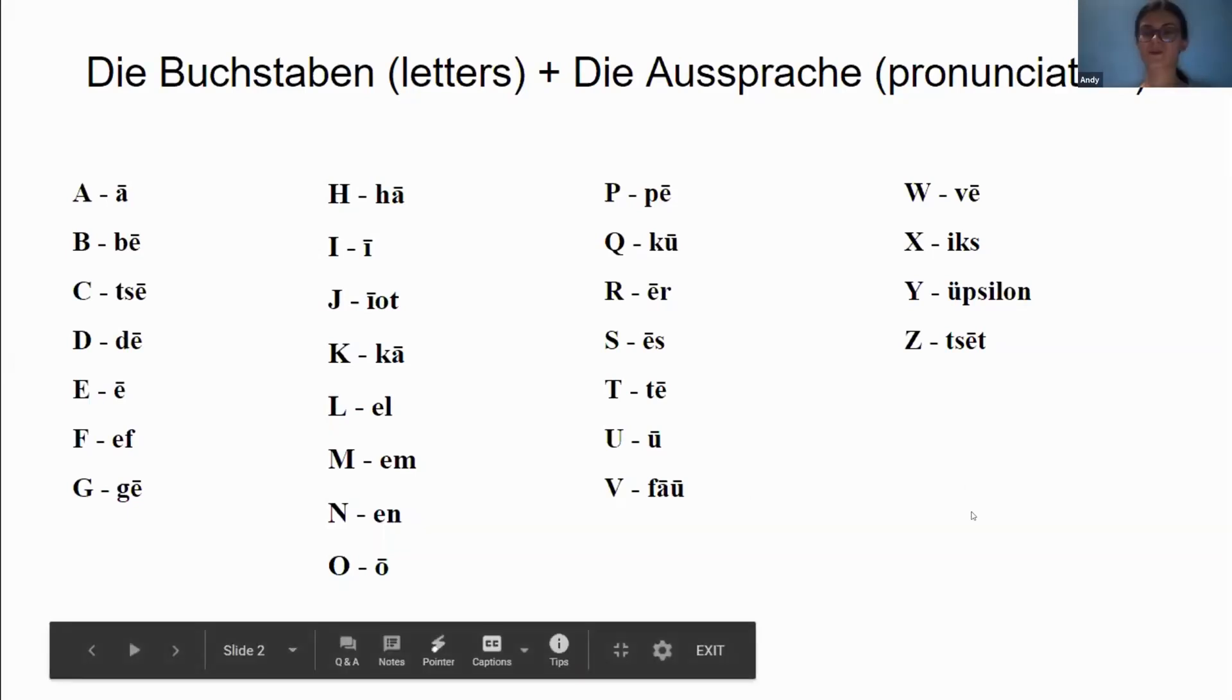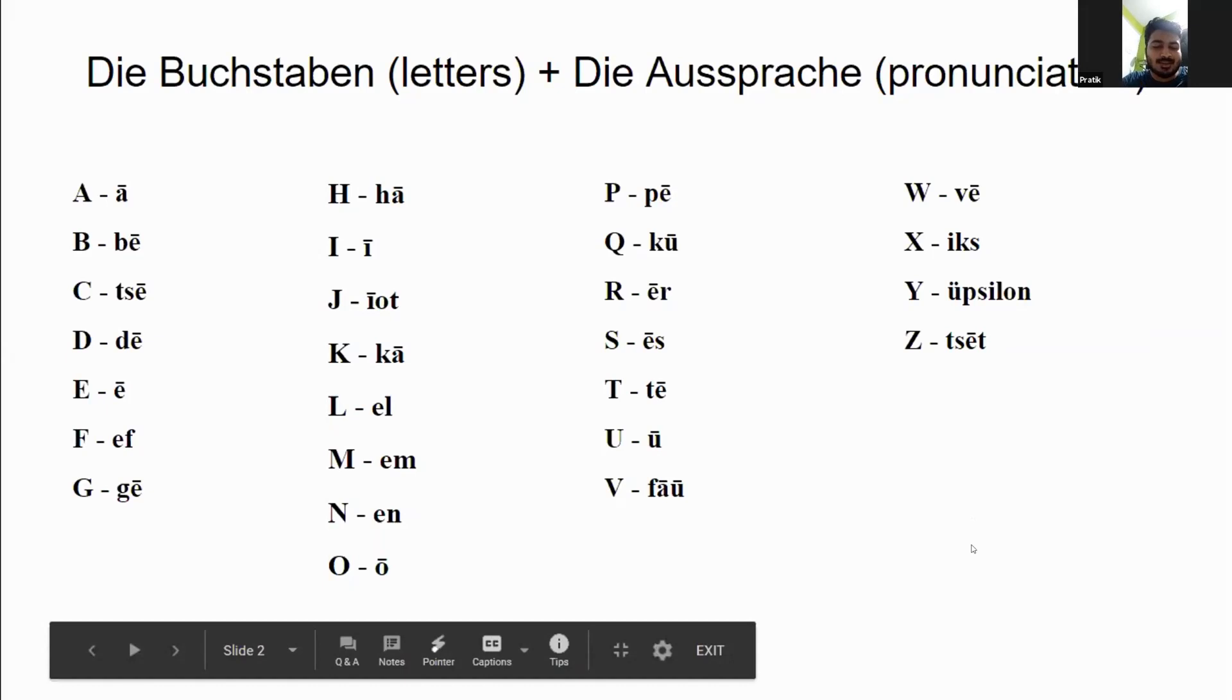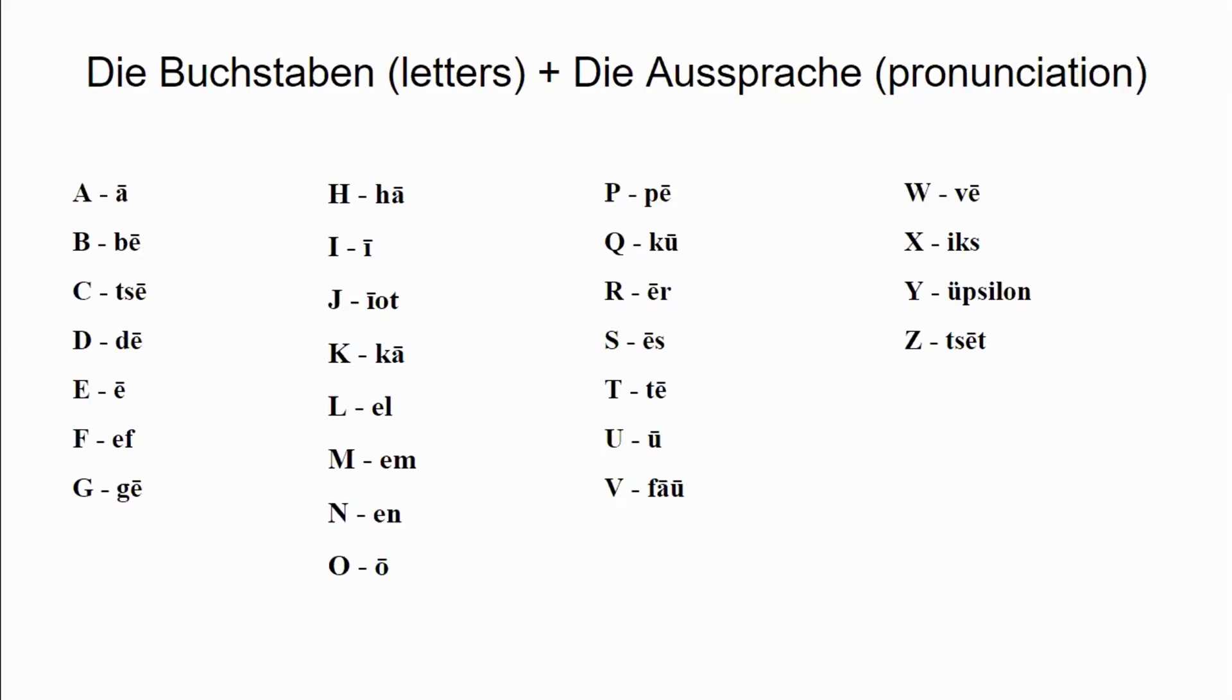Okay. Who wants to tell us the next row from P to V? Who was that? Pratik? Okay. Do you want to tell us? Yes, ma'am. Okay. Tell us. P is P. Okay. Q is Q. Mm-hmm. R is R. Okay. S is S. Mm-hmm. T is T. Yes. U is U. Yes. V is Fau. Very good. Very good. Perfect. Thank you so much, Pratik.